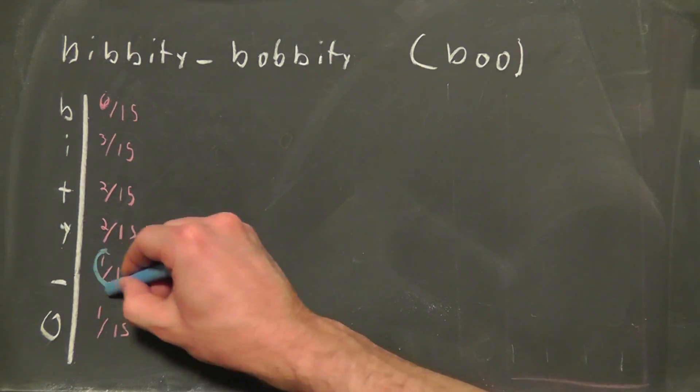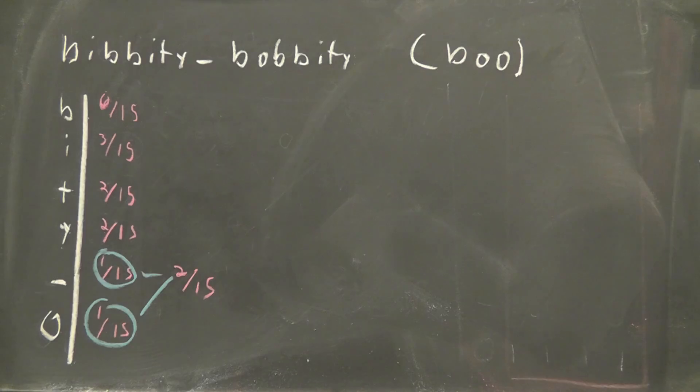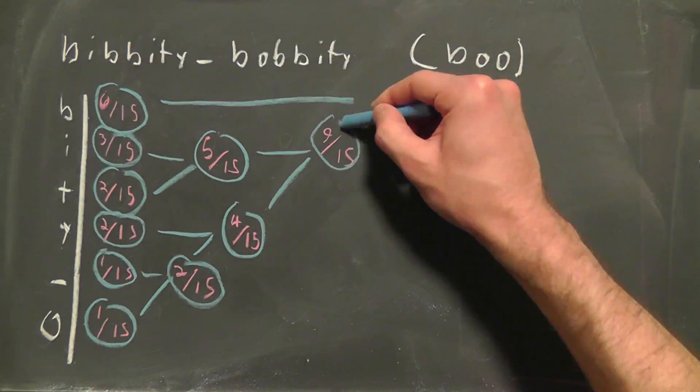Step two. Combine the two least frequent values together. Step three. Do step two again until you have created a binary tree.